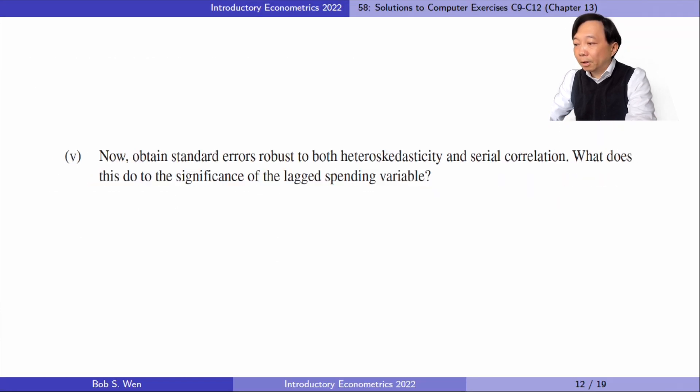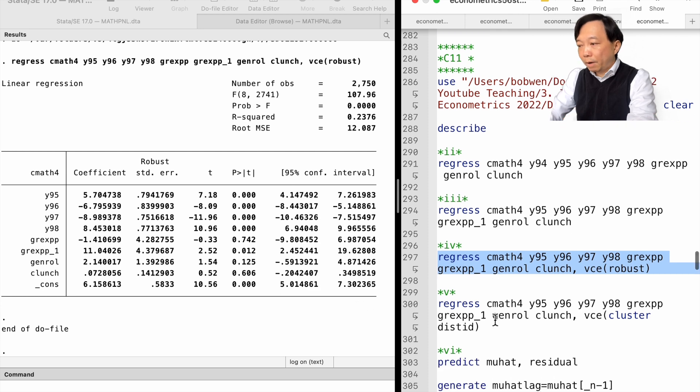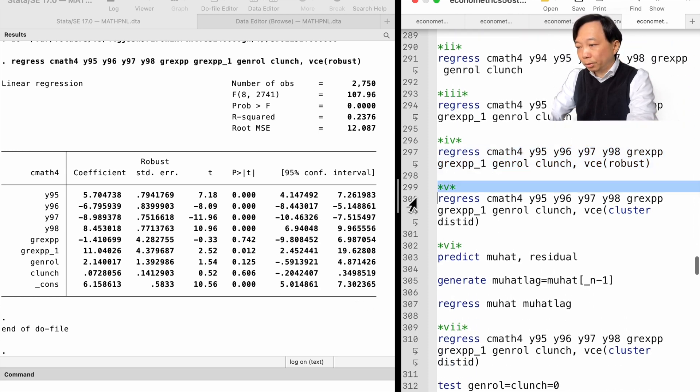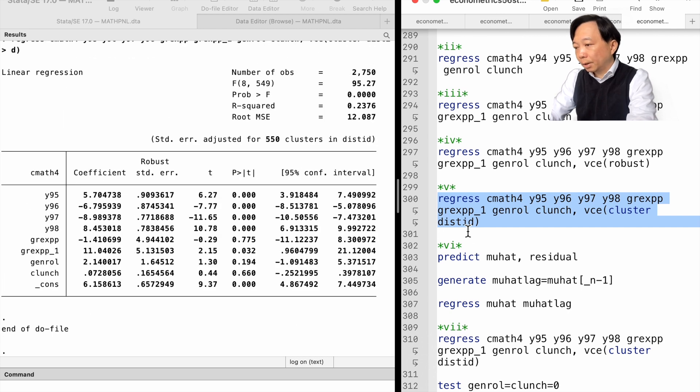In part 5, we obtain standard errors robust to both heteroscedasticity and serial correlation. What does this do to the significance of the lagged spending variable? We use the variance-covariance matrix option to specify the cluster in district standard errors. The standard error is 5.13 and the t-statistic is 2.15. The effect is statistically significant at the 5% level.